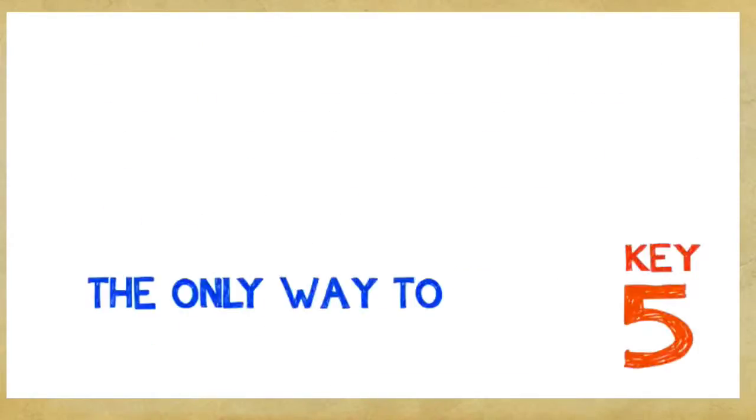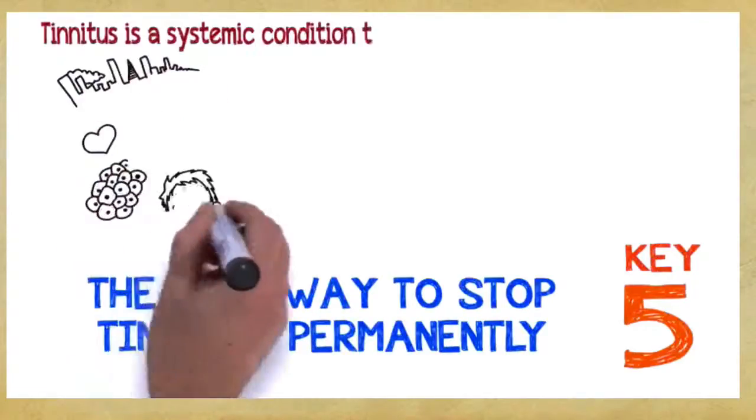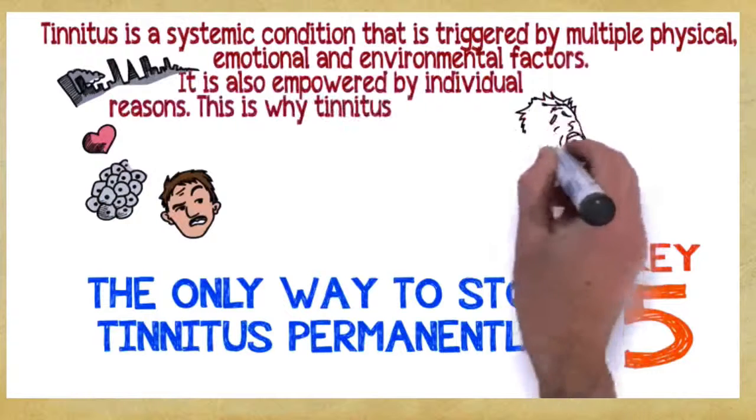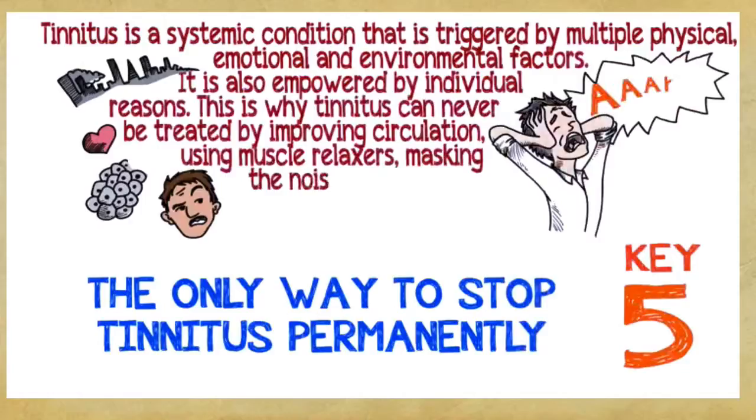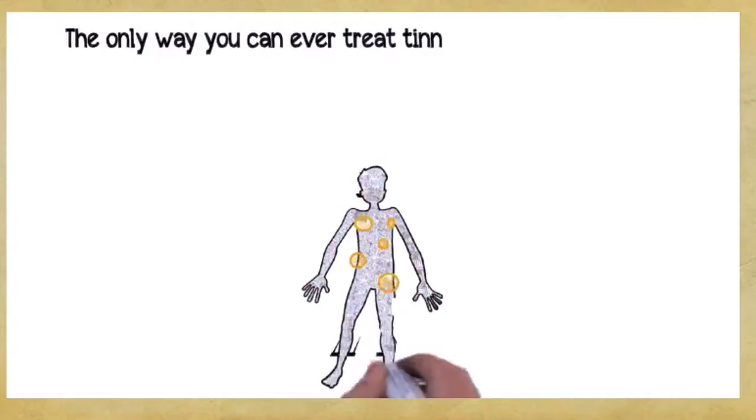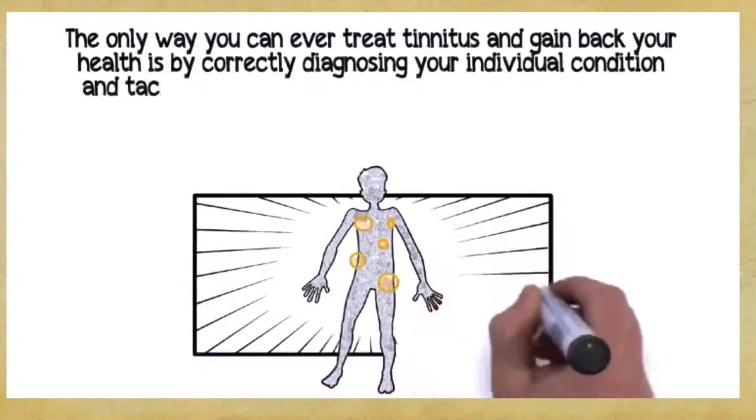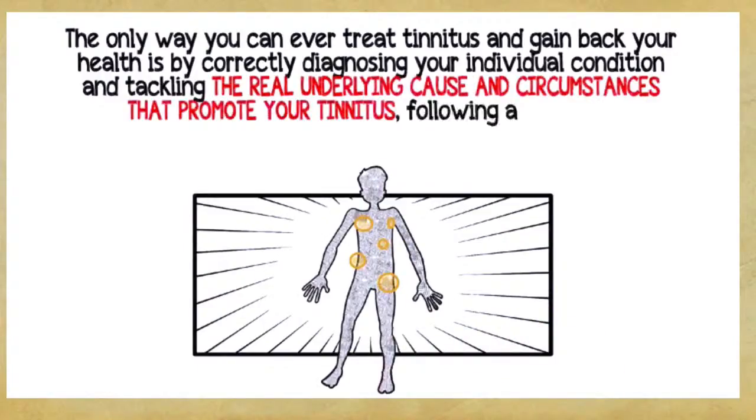Key number five: the only way to stop tinnitus permanently. Tinnitus is a systemic condition that is triggered by multiple physical, emotional, and environmental factors. It's also empowered by individual reasons. This is why tinnitus can never be treated by improving circulation, using muscle relaxers, masking the noise, or cutting a nerve in your auditory system. The only way you can ever treat tinnitus and gain back your health is by correctly diagnosing your individual condition and tackling the real underlying cause and circumstances that promote your tinnitus, following a complete, multi-dimensional, holistic program.